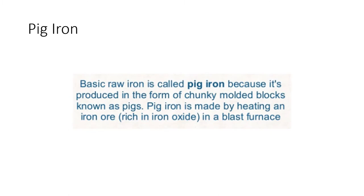What is pig iron? Basic raw iron is called pig iron because it is produced in the form of chunky molded blocks known as pigs. Pig iron is made by heating iron ore, rich in iron oxide, in a blast furnace.